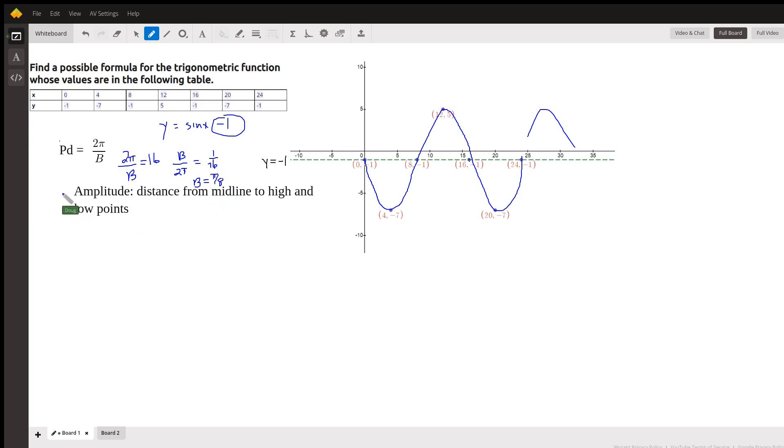And finally, the amplitude is the distance from the midline to the low and high points. So from negative one up to five is six, and from negative one down to negative seven is six. So the amplitude is six...